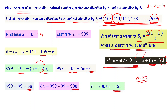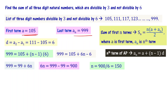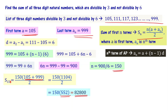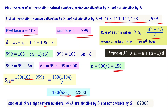Now substituting a = 105, an = 999, and n = 150 into the sum formula: S150 = 150 × (105 + 999) ÷ 2 = 150 × 1104 ÷ 2 = 150 × 552 = 82,800. Therefore, the sum of all three-digit natural numbers which are divisible by 3 and not divisible by 6 is equal to 82,800.